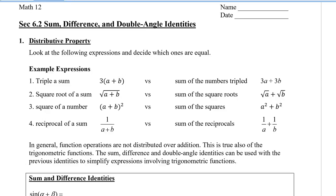If you've looked at them carefully, you'll find that if you triple a sum, it is the same as the sum of the numbers tripled. So the first expression is the only one where you can distribute into the brackets. Square rooting a sum — you can't take each square root individually. If you square a binomial, you can't square each number individually. And you can't separate a reciprocal into two reciprocals. In general, function operations are not usually distributed over addition or subtraction, and this is true of the trigonometric functions as well, which leads us into the sum and difference identities.